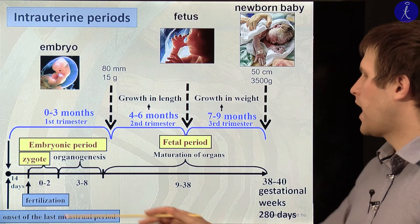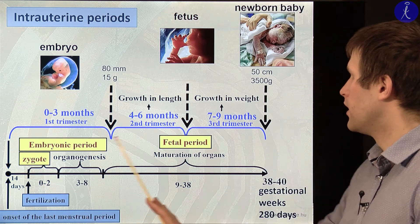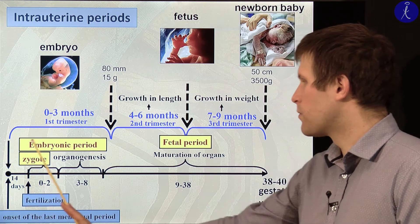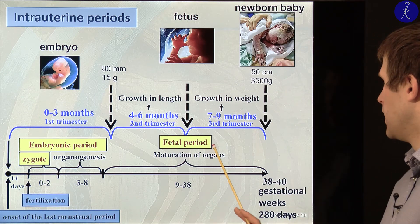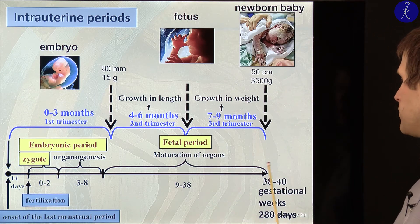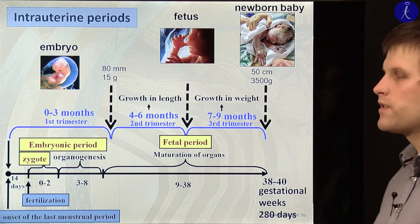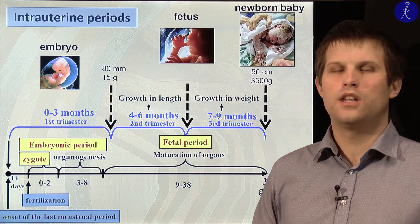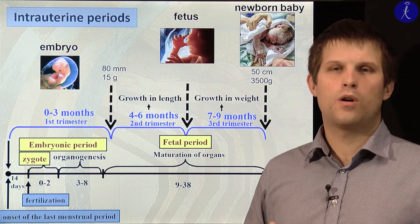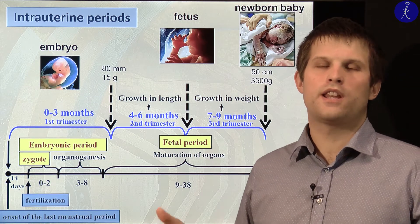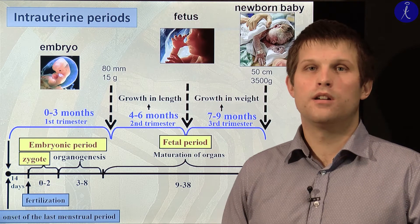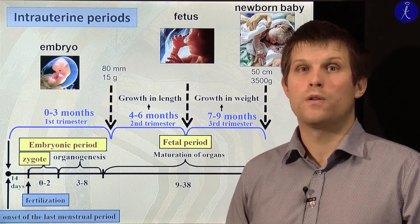The entire intrauterine life or pregnancy should be 38 to 40 weeks — this is the normal length — approximately 10 lunar months.